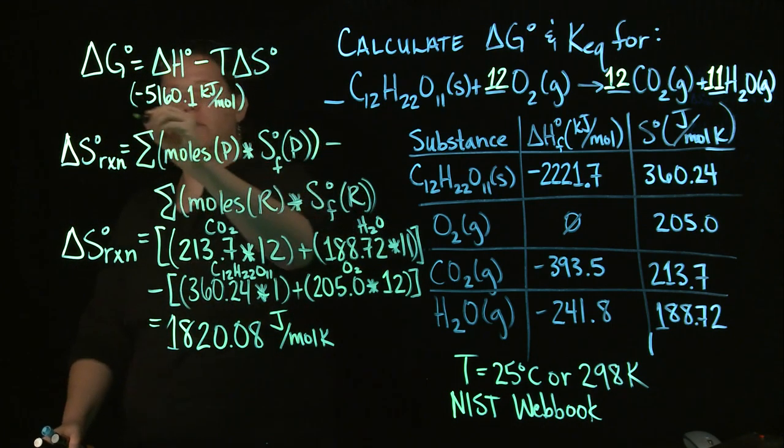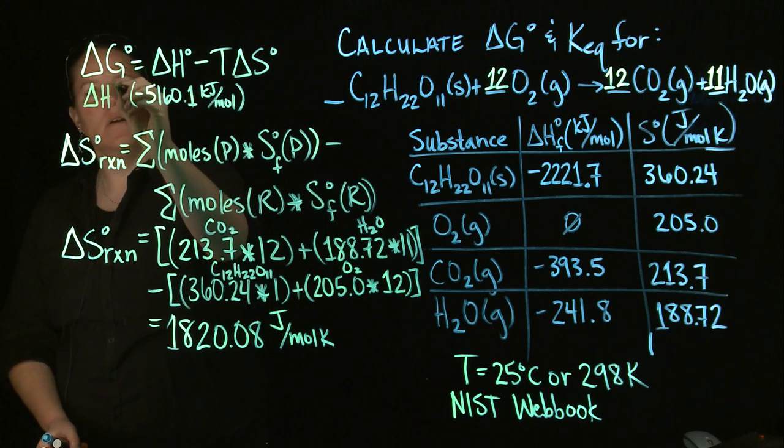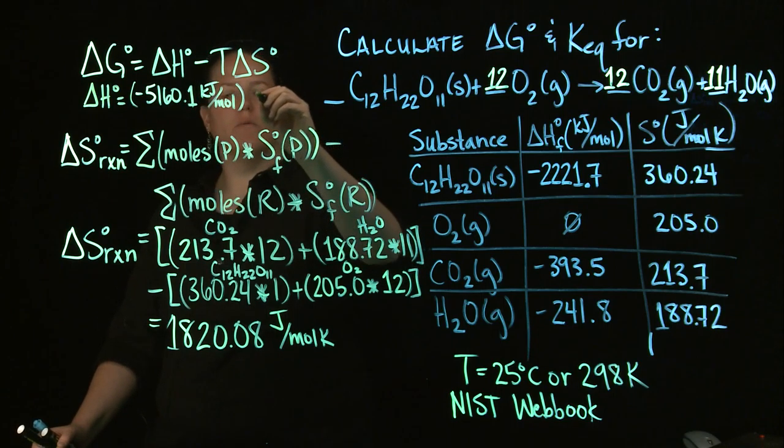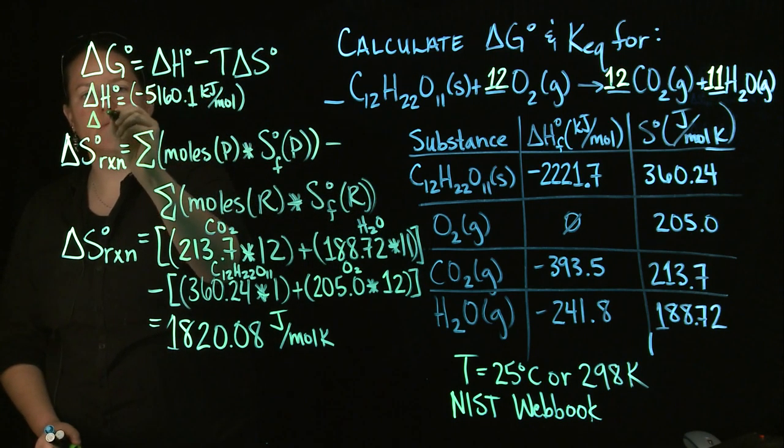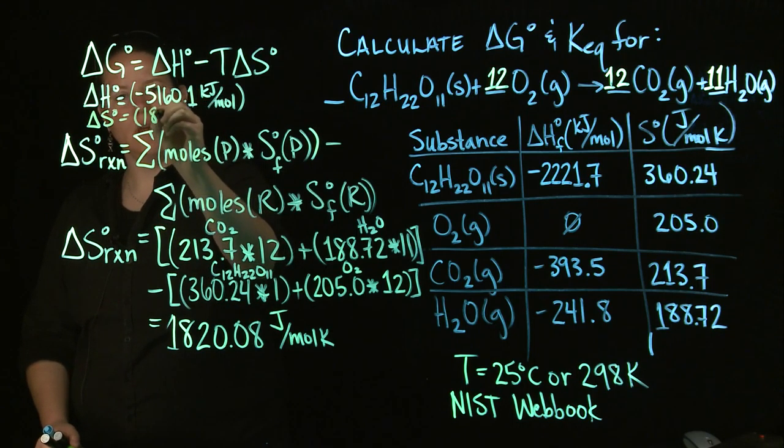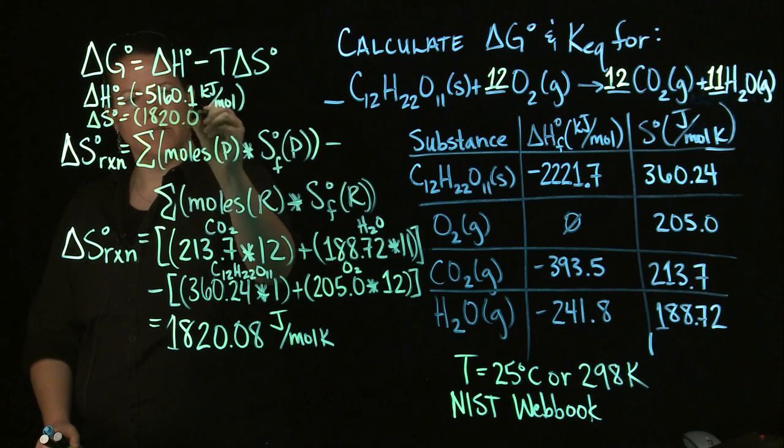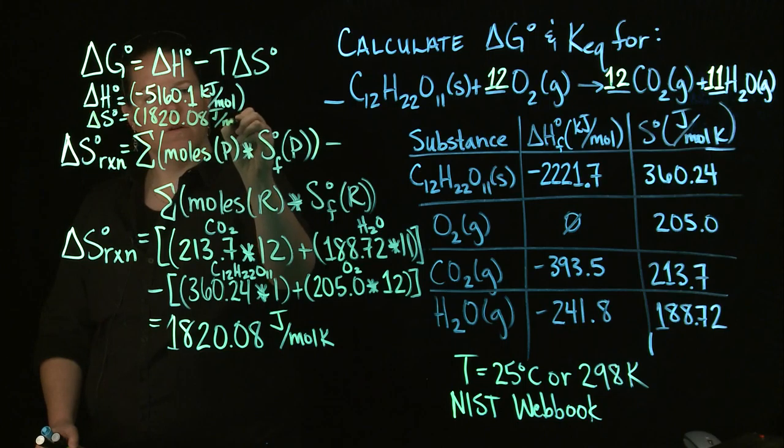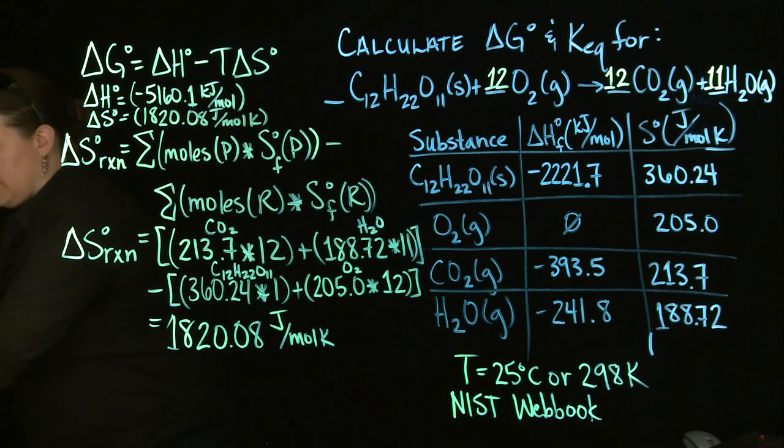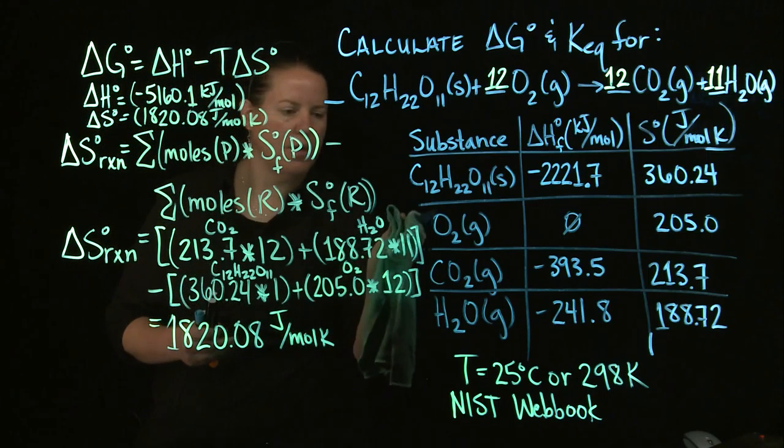So I'm going to write this up here as well. So S, we know delta H is equal to this. S is going to be equal to 1820.08 joules per mole K. Let's erase this and find G. And once we find G, we can find K pretty easily.